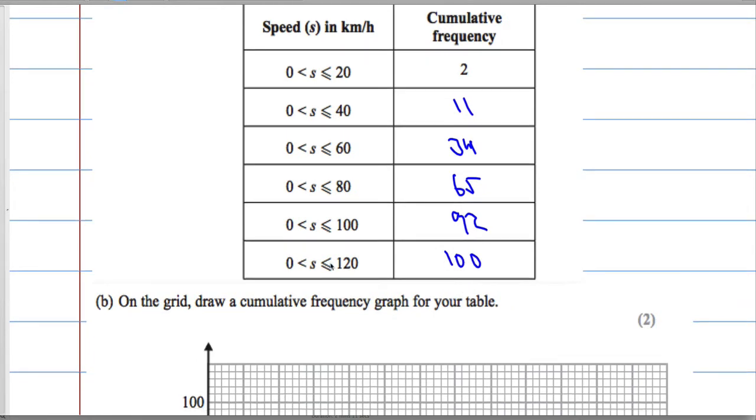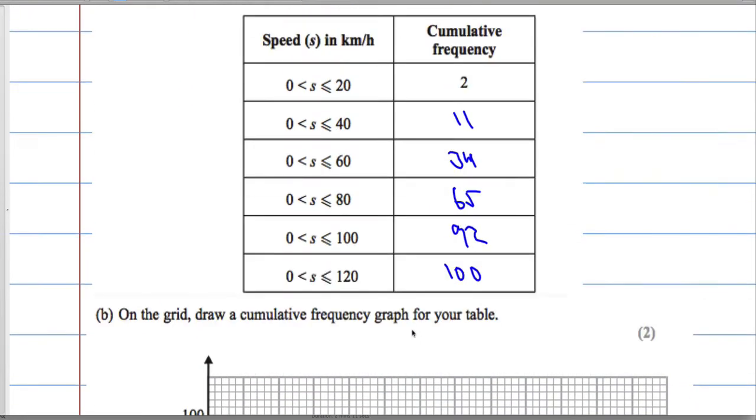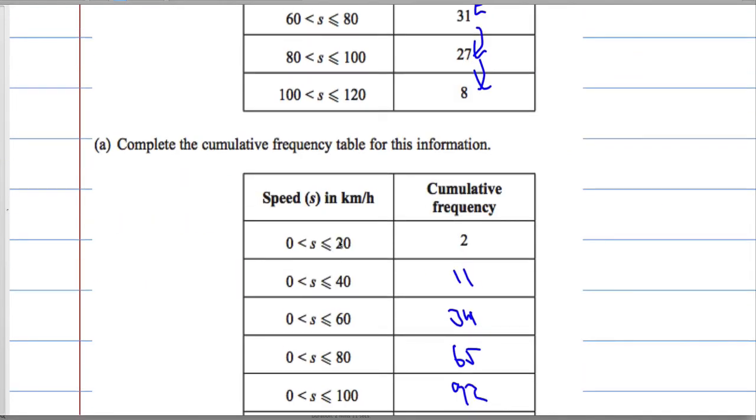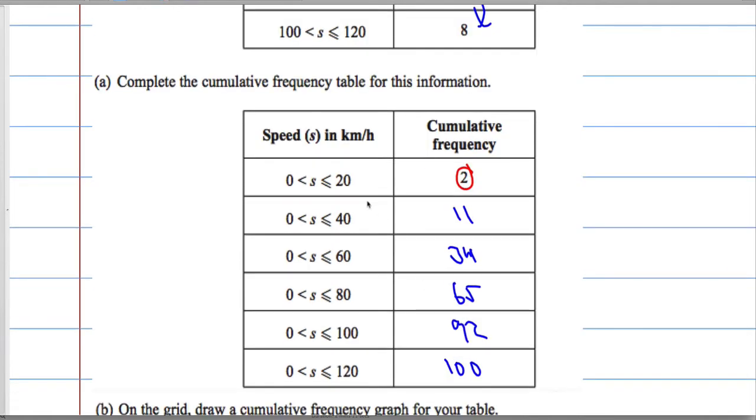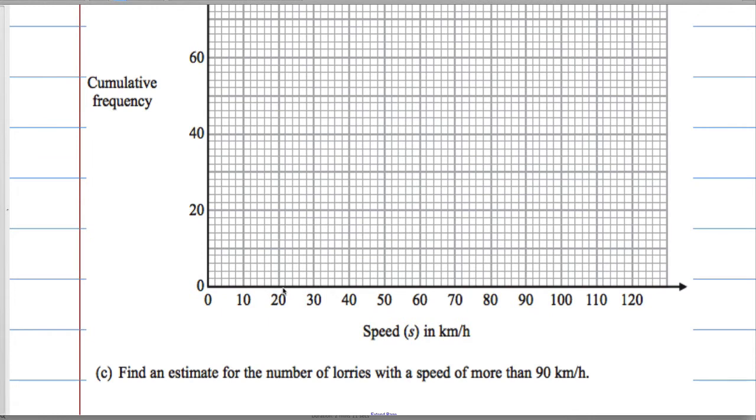Next part, we're asked to draw a cumulative frequency graph from the table. A couple of things to remember: we always plot the upper bound against the cumulative frequency. So let's start with 20 and 2. 20, and that would be 10, which means that must be 2.